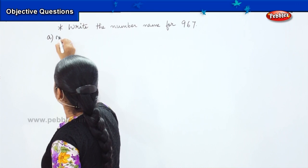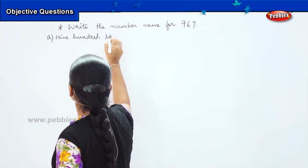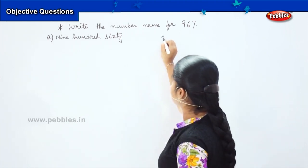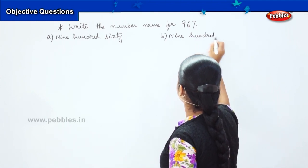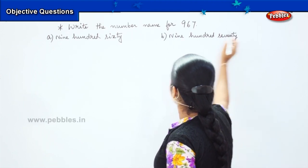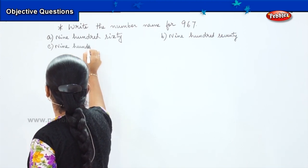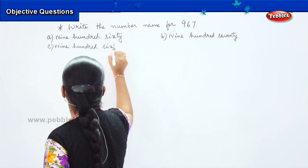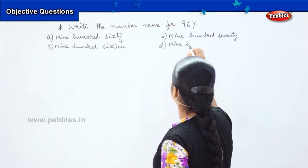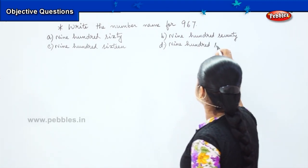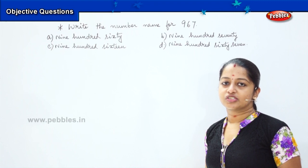The options are: option A is 960, option B is 970, option C is 916, and option D is 967. We will try and solve them one by one.